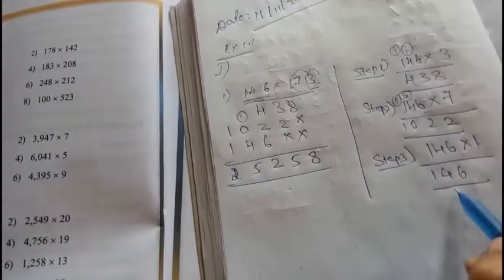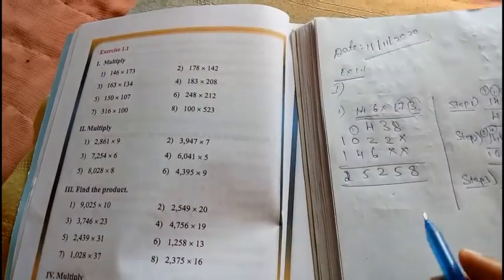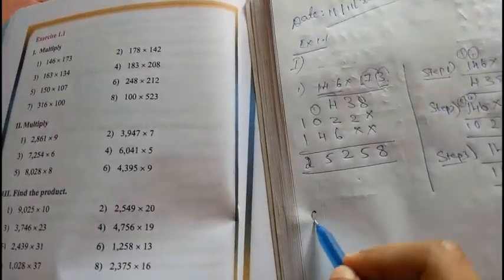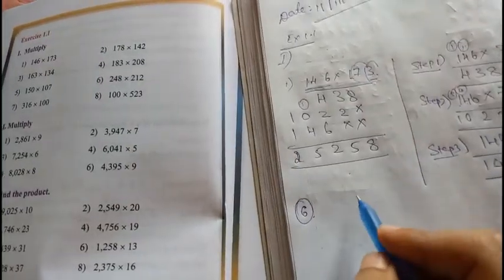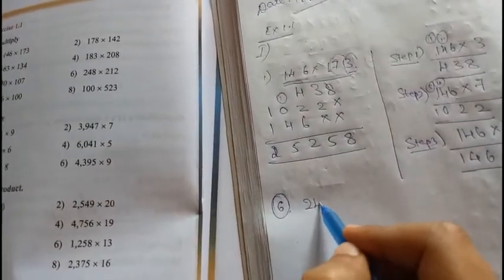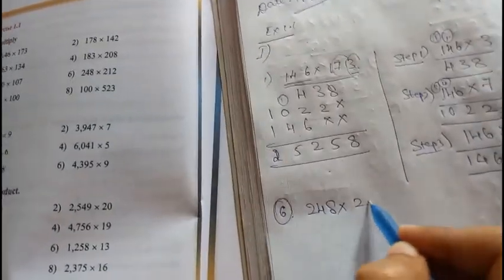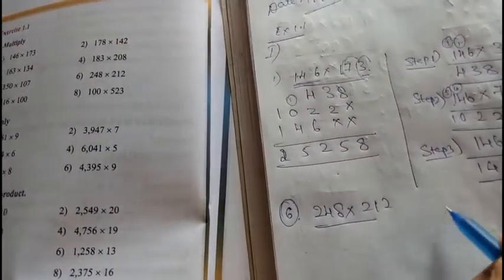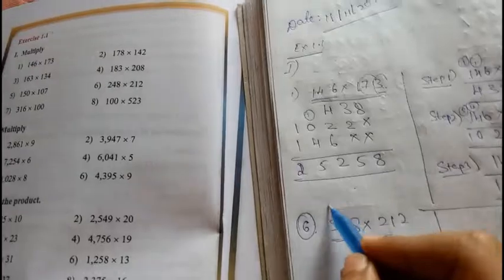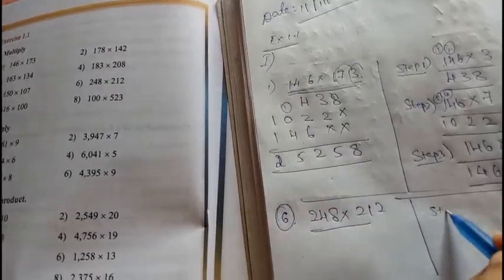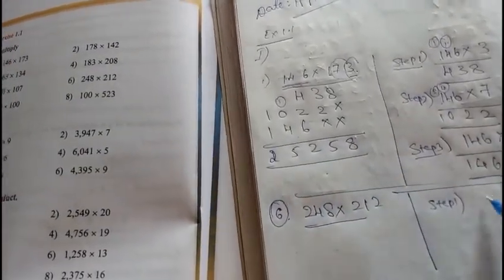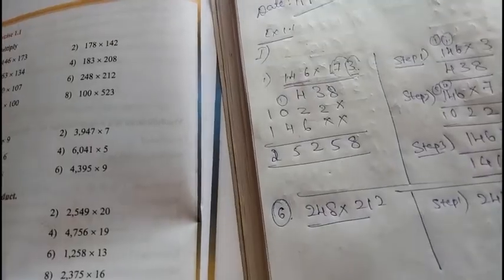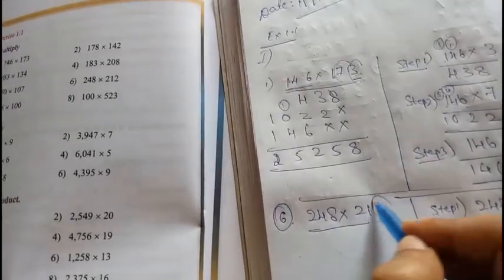In the exam you need to write both. Then I'll be solving the sixth question. What is the sixth question? 248 into 212. Similarly, step 1, take 248 into this number 2.